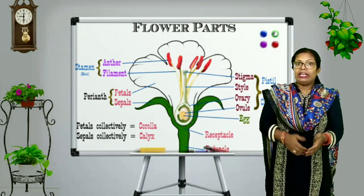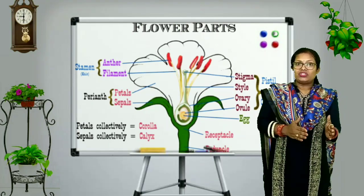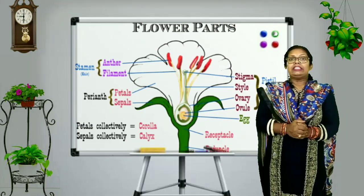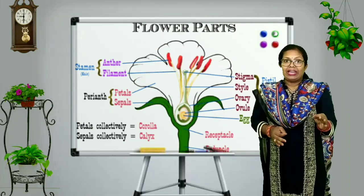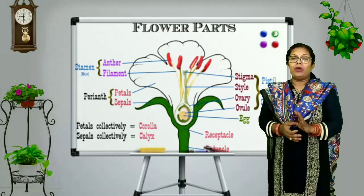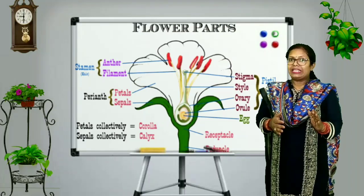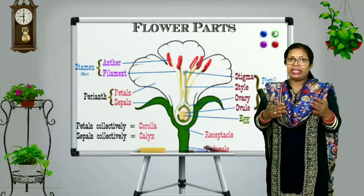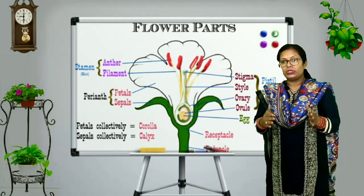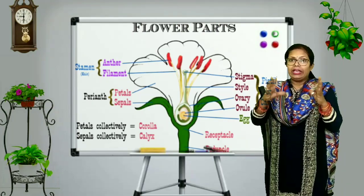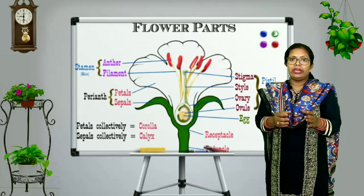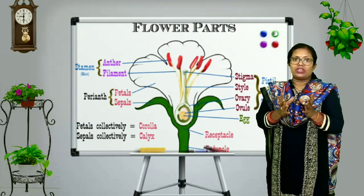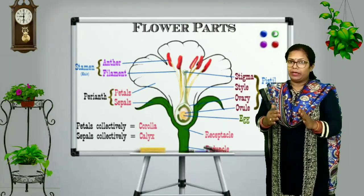So let's start with the structure of a flower. A flower is a very attractive and beautiful structure found in a plant. These are the specialized shoots — a specialized shoot which is the floral structure in the plant.